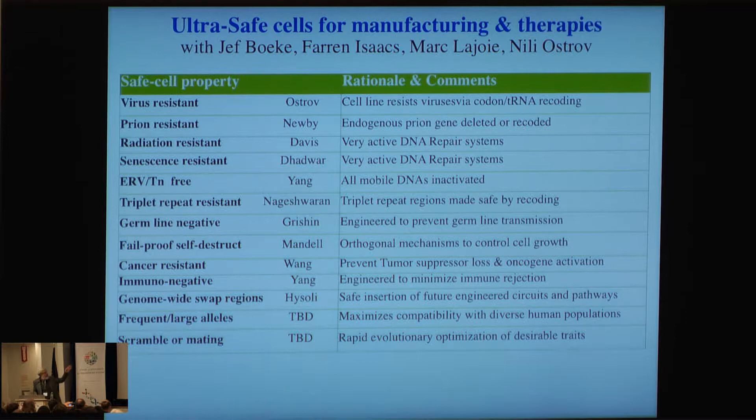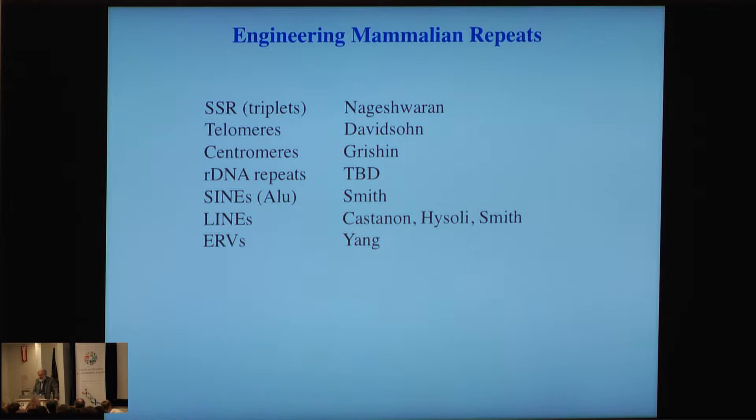We are engineering mammalian repeats — the simple sequence repeats, telomeres, centromeres, ribosomal DNA, SINEs like Alus and LINEs, and endogenous retroviruses. We've already knocked out 62 endogenous retroviruses in more than one different pig strain, which has emboldened us to take on all these other categories of repeats, some of which we haven't even sequenced yet.